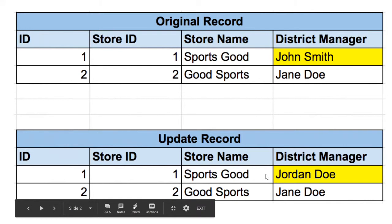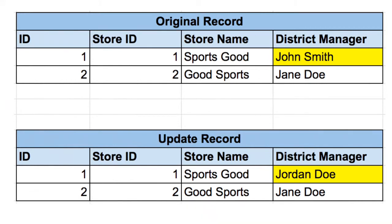There's a major problem with slowly changing dimension type one: you don't know when the change happened. You don't know when Jordan Doe became in charge of the store. So when you report on Jordan Doe — say, total sales of anywhere Jordan Doe has been a manager — you can't do that accurately because you've lost John Smith's data. Not only that, but you'll misrepresent some of Jordan Doe's sales because some of those sales were actually John Smith's.